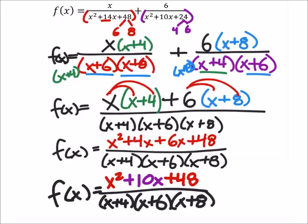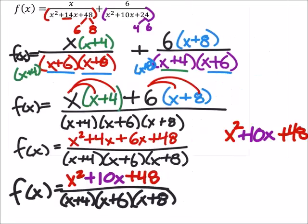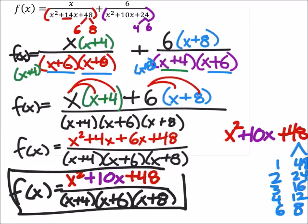Now we need to look at that top expression there. And if we can find any two factors of 48 that would add up to 10, then we can split that up as well. So here's a list of all the factors I can think of. And right there, I don't see that any of those are going to add up to 10. So what that means is that this is going to be our final answer.